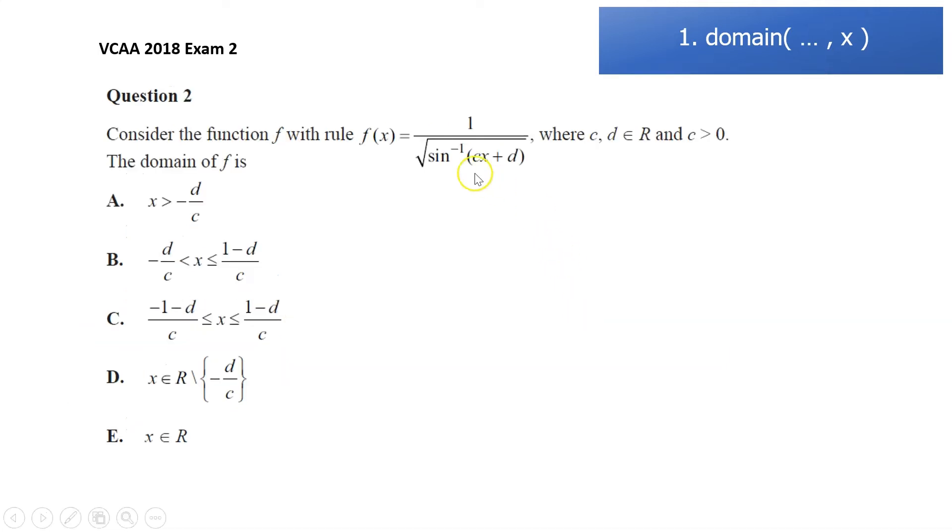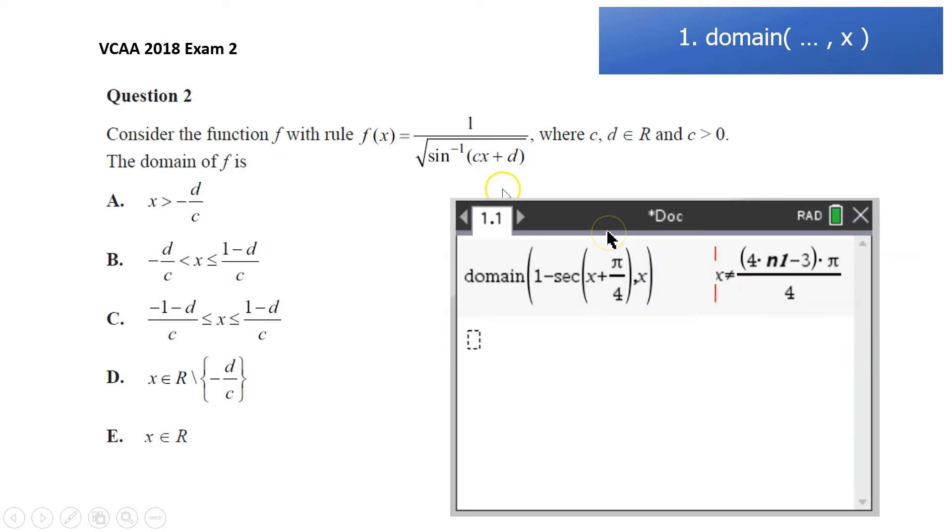Another example, so this was from 2018 exam 2, and it's 1 over square root of an inverse sine. So again, we can use the domain function for that.